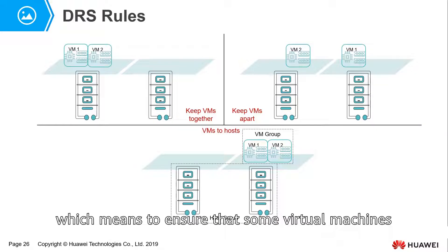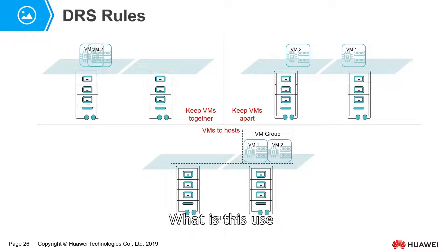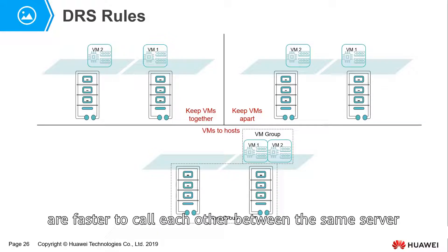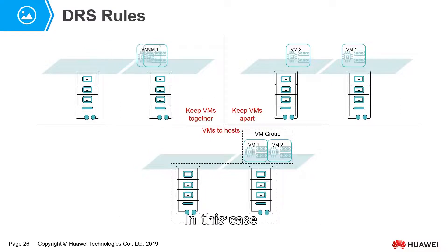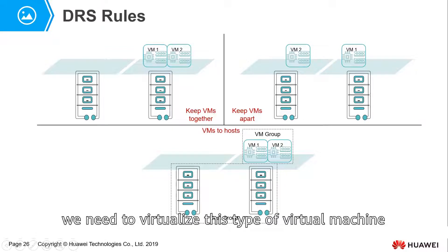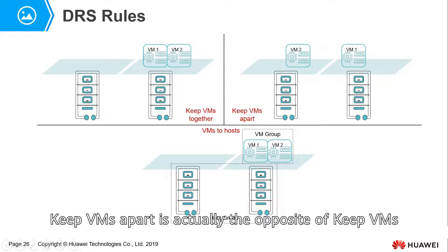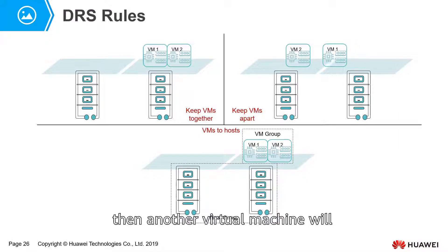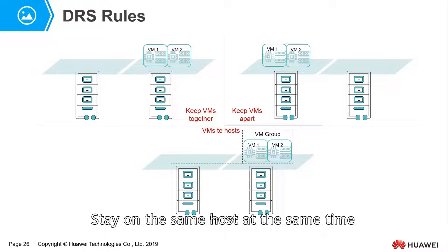Keep VMs together ensures that certain virtual machines must run on the same physical host at the same time. The use case is, for example, that related applications communicate faster when they call each other within the same server and do not need cross-host calls. In that case, we group these virtual machines together to keep them on the same host. Keep VMs apart is the opposite: if you migrate one virtual machine to a host, the other virtual machine will automatically migrate to a different host and will never stay on the same host at the same time.